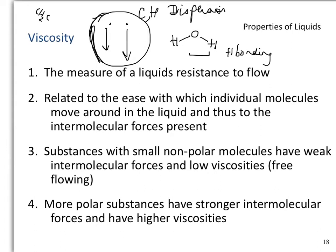Consider ethylene glycol, which has an OH group and another OH group. If H₂O contains one set of hydrogen bonding, ethylene glycol is going to show hydrogen bonding at both ends. Since you have a greater amount of hydrogen bonding in the case of ethylene glycol — which is your antifreeze — it is going to travel even slower compared to water.